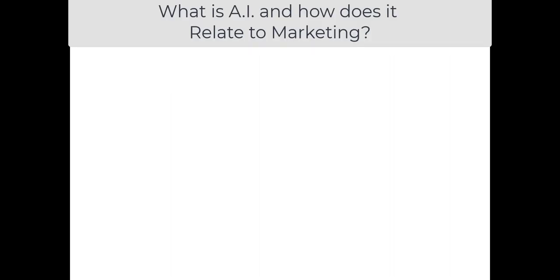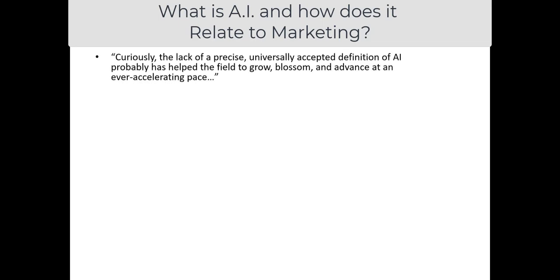There's one last term I haven't described yet — artificial intelligence — and why it matters to marketing. I've saved this for last because it's very hard to put your finger on exactly what uniquely defines artificial intelligence. When looking through recent literature, I noticed quite a few academics and people working in this space for years actually admit it's very difficult to define. Curiously, the lack of a precise, universally accepted definition of AI probably has helped the field to grow, blossom, and advance at an ever accelerating pace.